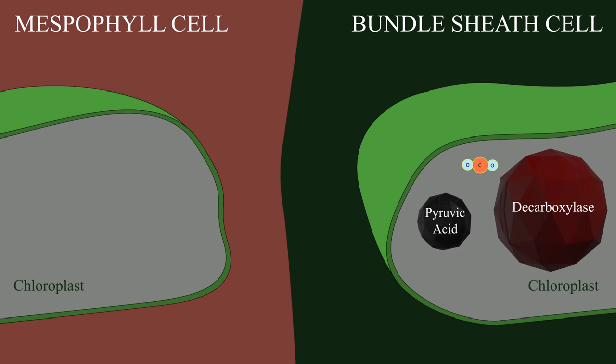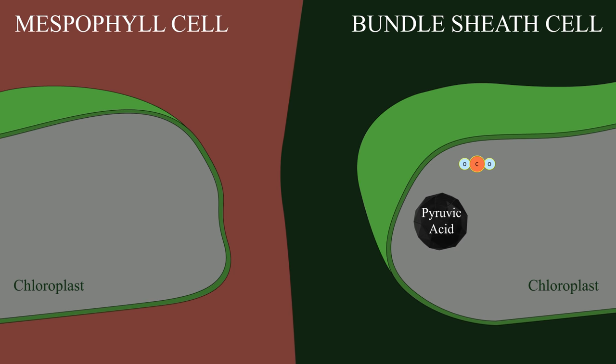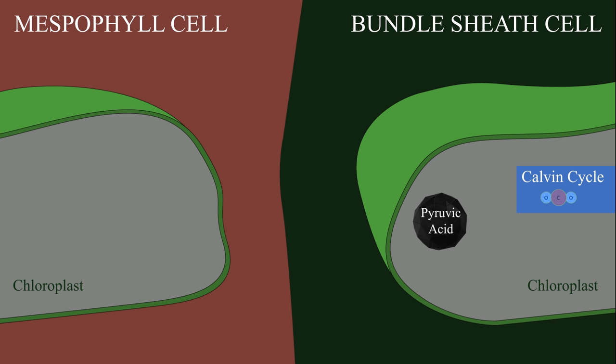This is the plant's ultimate agenda. Within the chloroplasts of the bundle sheath cells, so carefully guarded from the presence of oxygen by the concentric ring of mesophyll cells surrounding them, rubisco is flooded with basically pure CO2 with no oxygen to confuse it. The CO2 enters the Calvin cycle within the chloroplasts of the bundle sheath cells, and the C4 plant has successfully bypassed photorespiration.